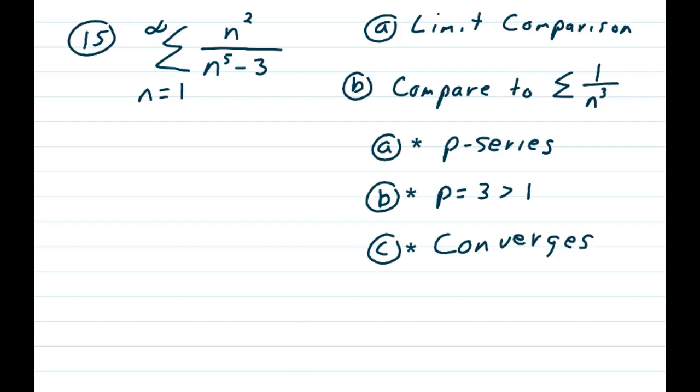Part b: power is 3 greater than 1. Part c: the p-series 1 over n cubed converges.